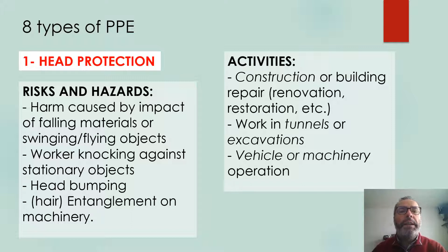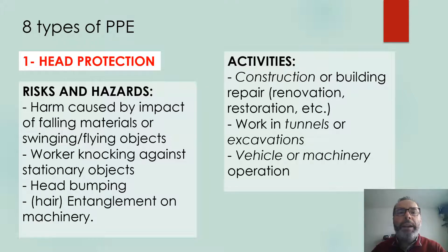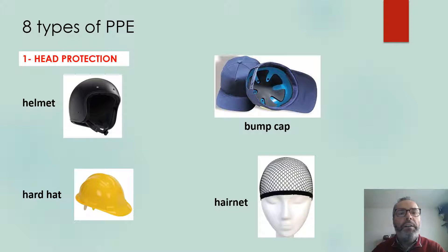Let's start with the eight types of PPE. The first one is head protection. This type of items helps to prevent harm and risks caused by impacted falling materials, swinging or flying objects, the worker knocking against stationary objects, head bumping on these objects, and also the entanglement of some parts of the head in machinery, such as the hair. Activities that typically require this type of protection are construction and building repair, working in tunnels or excavation, or the operation of vehicles and machinery. Examples include helmet, hard hat, bump cap, hairnet, among others.